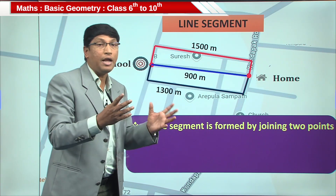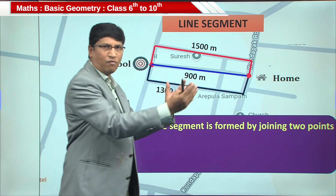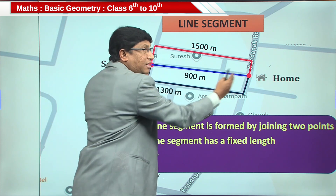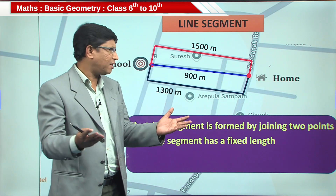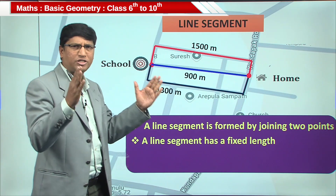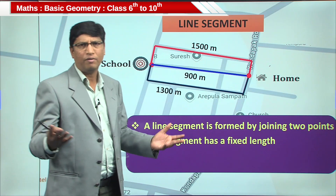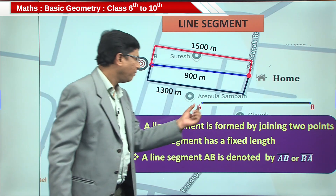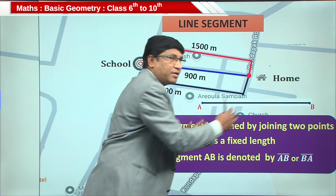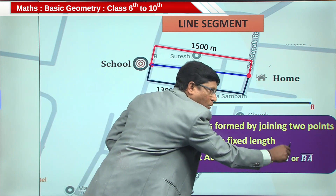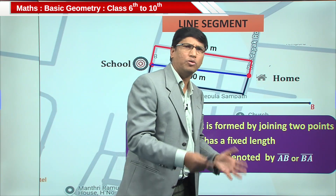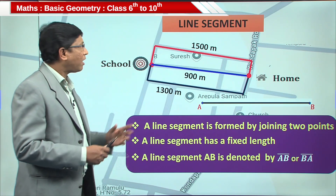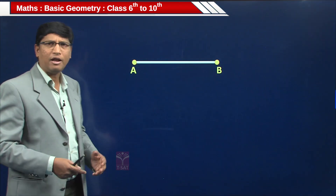A line segment is formed by joining any two points — here, home and school. When you join these two points you get a line segment. A line segment has a fixed length; this one is 900 meters, but it can be any length — 1 meter or 1 centimeter, for example the edge of this digital board. A line segment AB is represented by writing AB with a bar over it, or BA with a bar — both represent the same line segment.